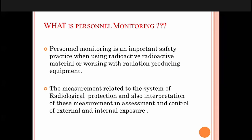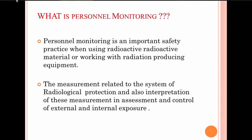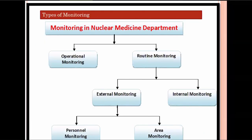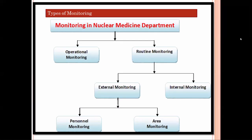We monitor that person's biological protection through personal monitoring. In nuclear medicine, monitoring covers all radiation workers in departments like radiology, radiation therapy, radiation oncology, and nuclear medicine. Nuclear medicine is one department where non-sealed radioactive material is used. Monitoring is divided into two types: operational monitoring and routine monitoring.